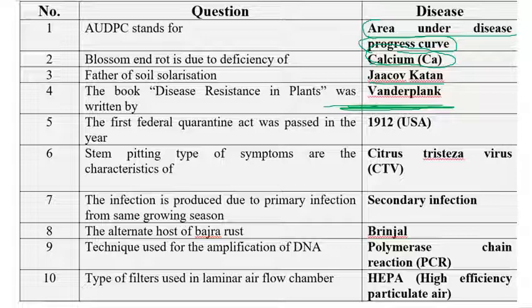The first federal quarantine act was passed in the year 1912. In India, the same type of act was passed with the name DIP — Destructive Insect and Pest Act — in the year 1914. In the USA, it is called the Federal Quarantine Act, passed in 1912.